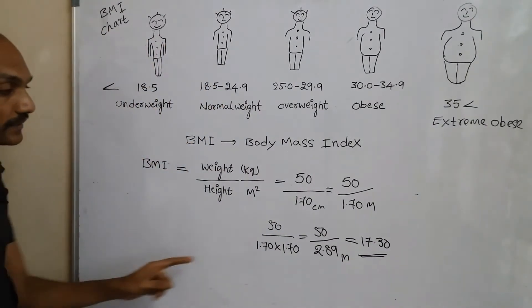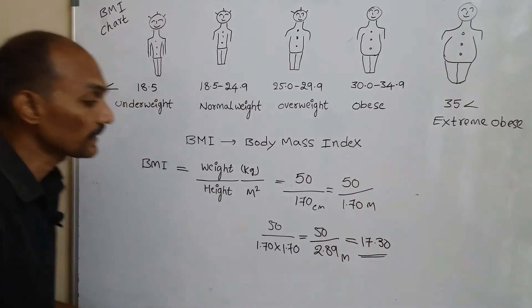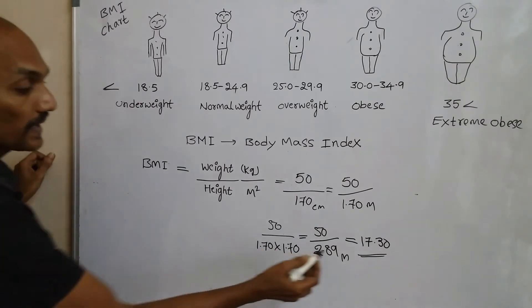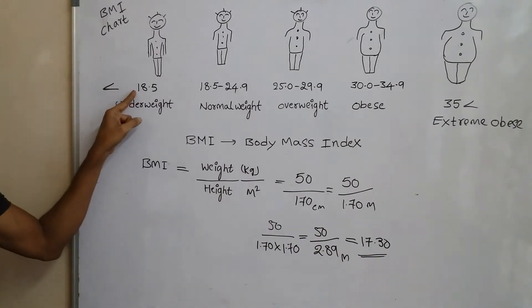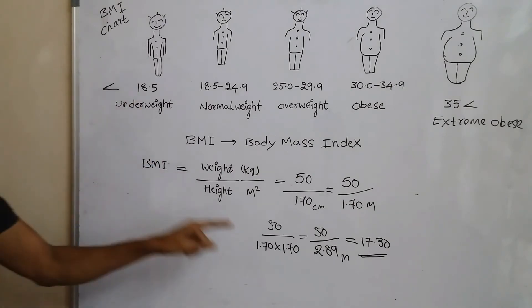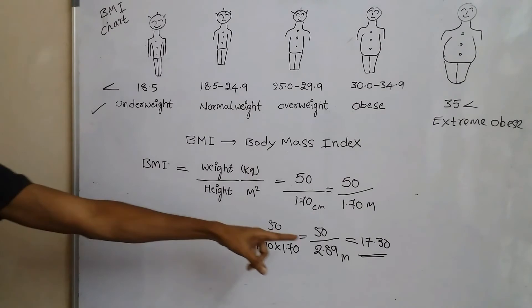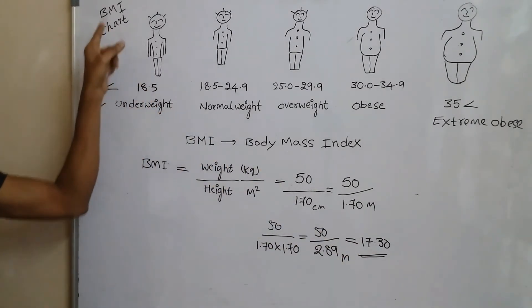Here the value is 17.30. The person's BMI value is 17.30, that means the person is underweight because his BMI is less than 18.5. According to the BMI chart, the person is underweight.